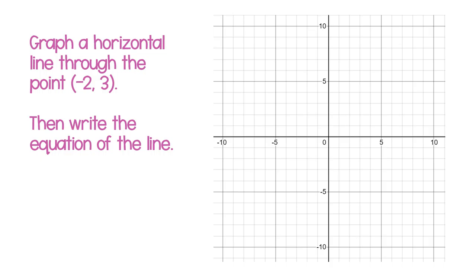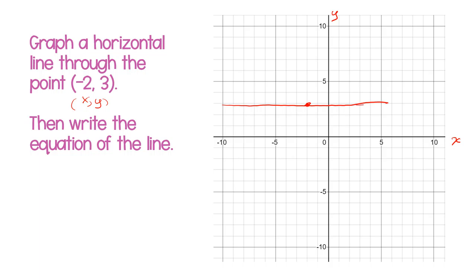So if I'm going to graph a horizontal line through the point negative 2, 3, I'm going to find the point negative 2, 3. Remember that this is my x-axis and this is my y-axis. When I graph, this is my x-coordinate and this is my y-coordinate. So if I'm going to graph the horizontal line through that point, it's just going to be a straight line right through that point.